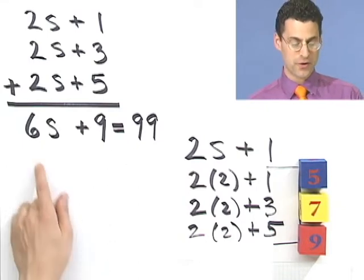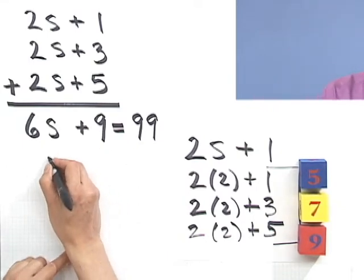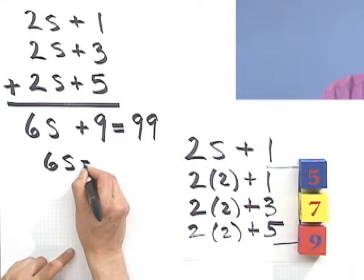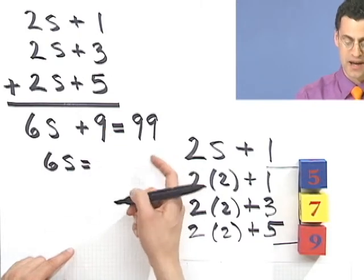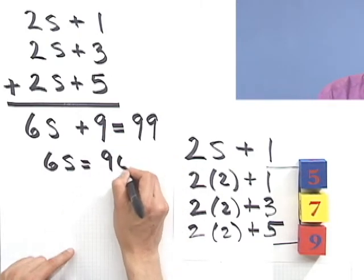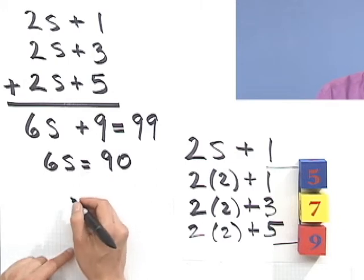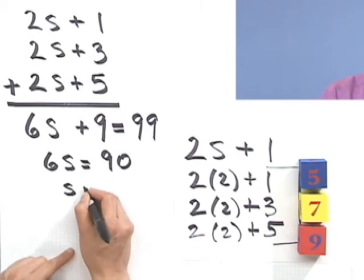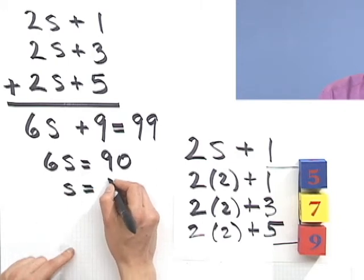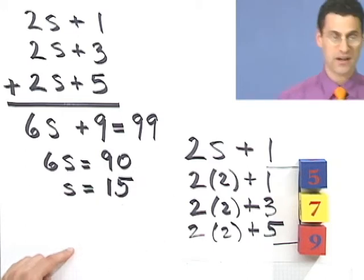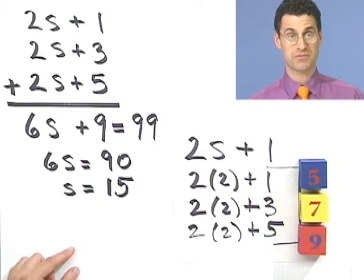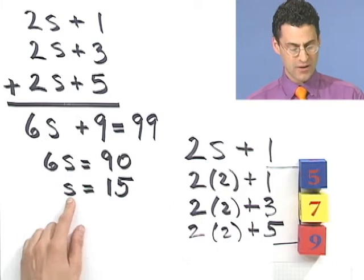All right, well now I want to solve here for s. So what does s equal? Well, six s equals, if I bring this nine over, I subtract, I get 90. And so therefore, what does s equal? Well, s would equal 15. If I divide both sides by six. Okay, s equals 15.